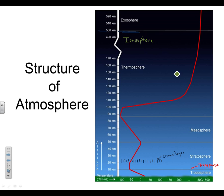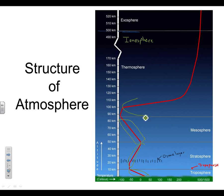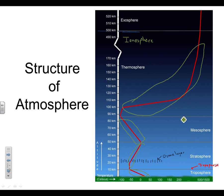I'm not going to ask you for specific temperatures — what I want is the trend. In the troposphere, it gets colder with altitude. In the stratosphere, it gets warmer with altitude. In the mesosphere, it gets colder with altitude. In the thermosphere, it gets warmer with altitude. Those are our four distinct layers: colder, warmer, colder, warmer.